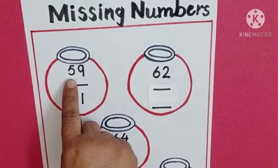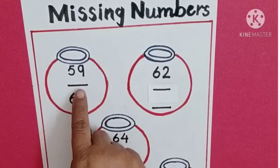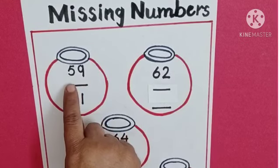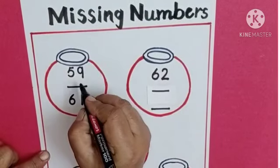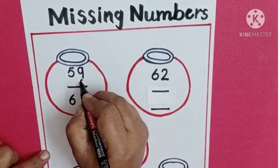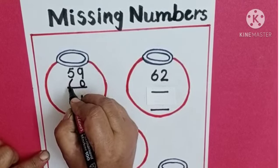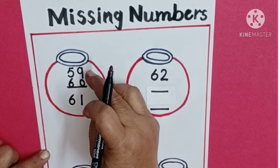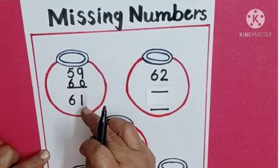Look here. Which number is this? 5, 9, 59. Which number will come here? After 9, 0 will come and after 5, 6 will come. Here we will write 0 and after 5, 6. 6, 0, 60. After 60, 6, 1, 61.